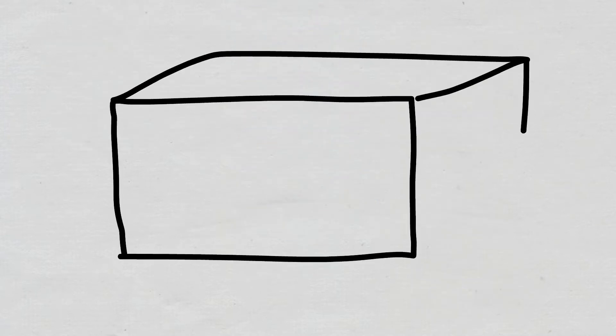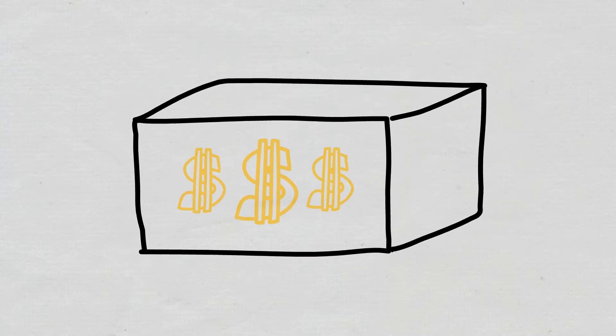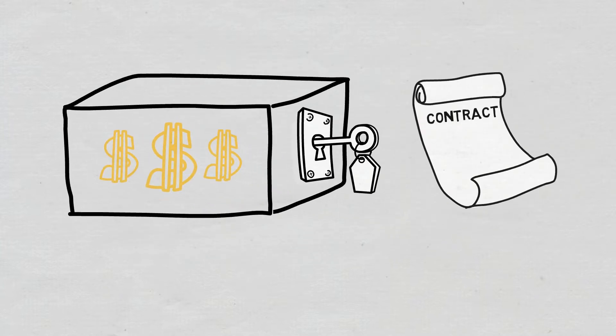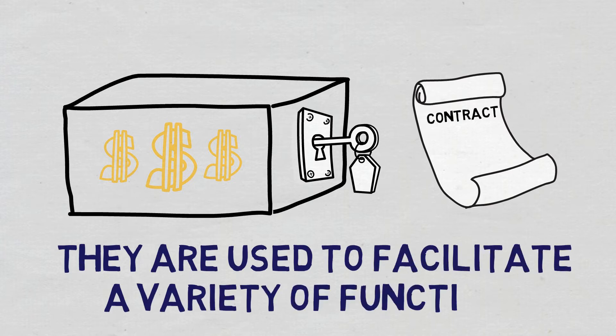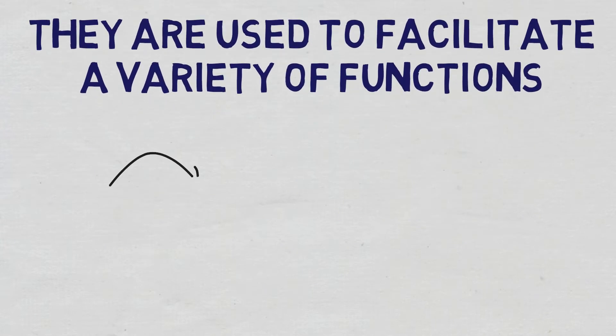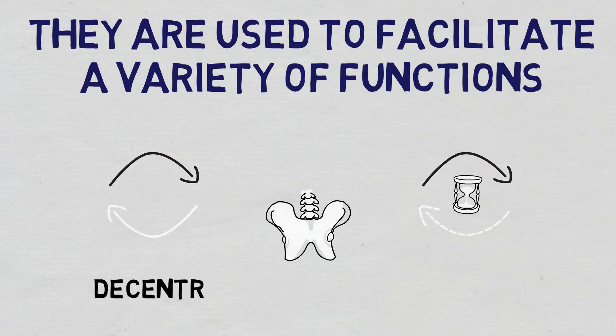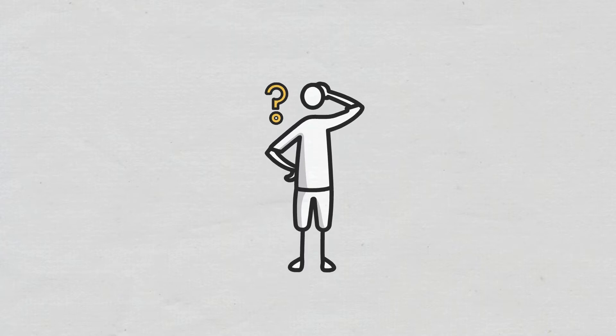A liquidity pool is, in essence, a collection of funds that are locked in a smart contract. They are used to facilitate a variety of functions, such as trading and lending, and stand as the backbone of many decentralized exchanges. Before we dive deeper into the mechanism behind liquidity pools and automated market makers, let's see why we need them in the first place.